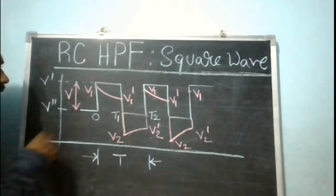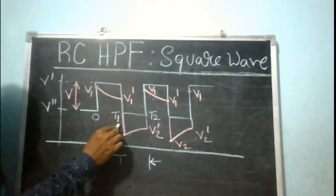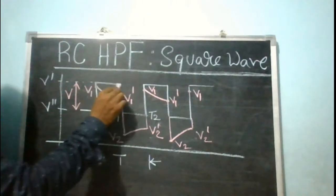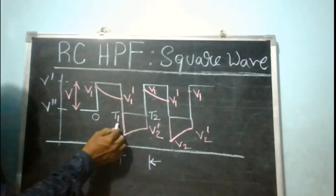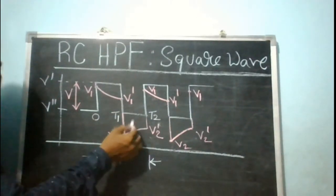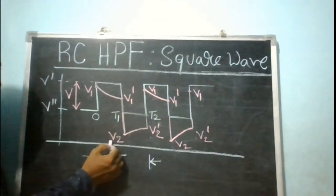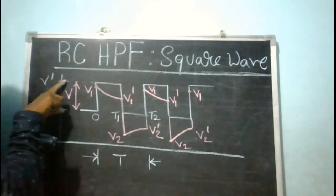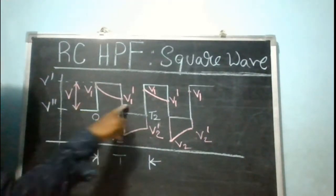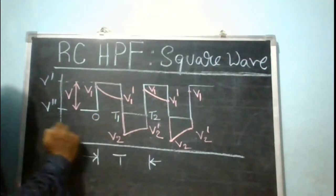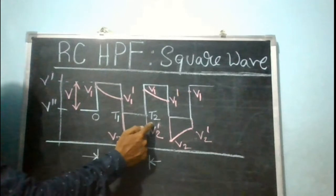Starting with an initial output voltage V1 at t = 0, over the interval 0 to T1, my input is a constant step input, so the output takes the standard discharging equation. At t = T1 the output is denoted V1'. Then at T1+, there is a sudden change in input from V' to V'', causing the output to also suddenly change from V1' to V2, where V2 is given by V1' minus capital V.